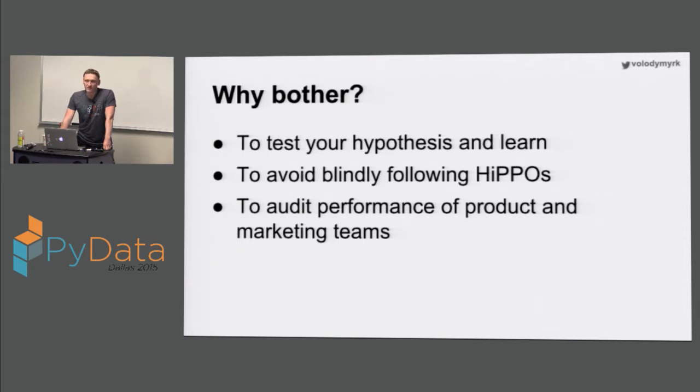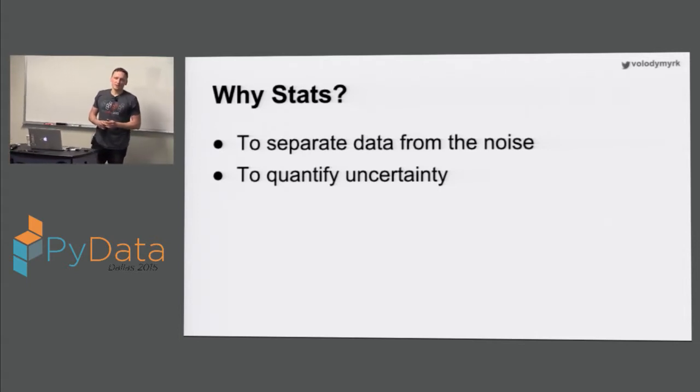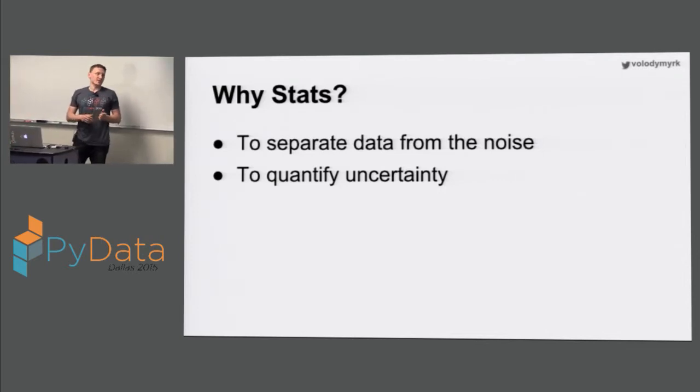Why do we actually need to do experiments and A-B tests in particular? Obviously, the main reason is to learn the market preference and also to actually have hard data to argue with HIPPOs. And HIPPO is the highest paid person opinion. And sometimes those guys win the argument. And if you have hard data, it's actually much easier to talk to them. Why do we need stats? In a lot of cases, you can just look at the outcome of your experiment and I'll be showing some examples later on. You can just see that one group is clearly outperforming the other group. But in a lot of cases, the question is, do we just observe randomness here? Or is one group definitely outperforming the other group?